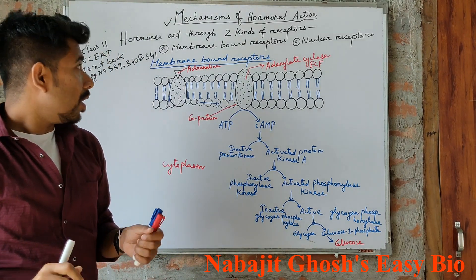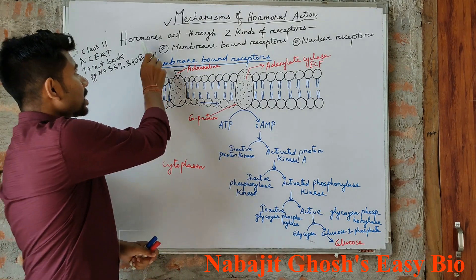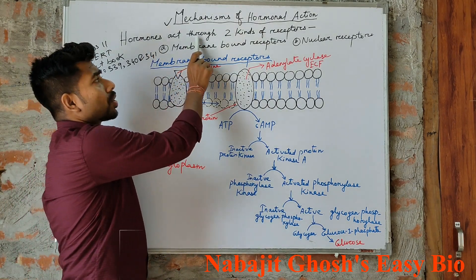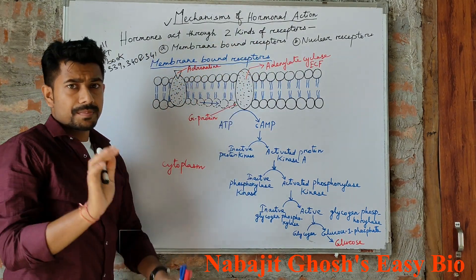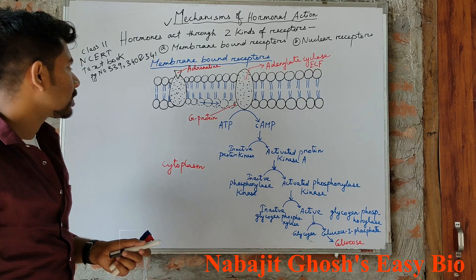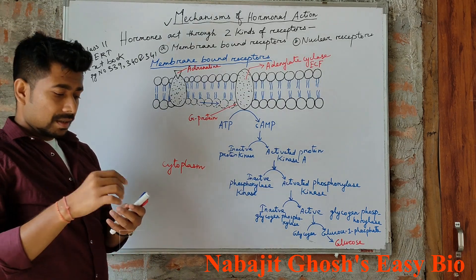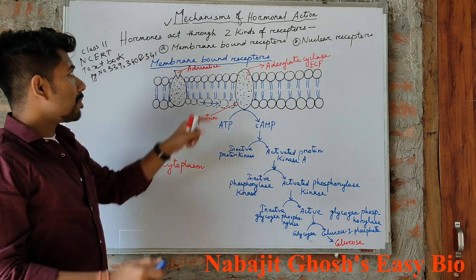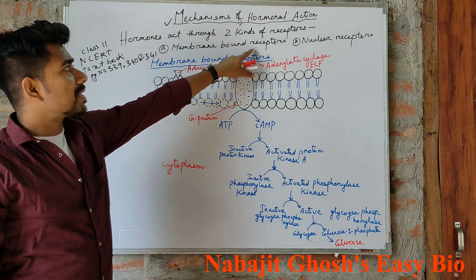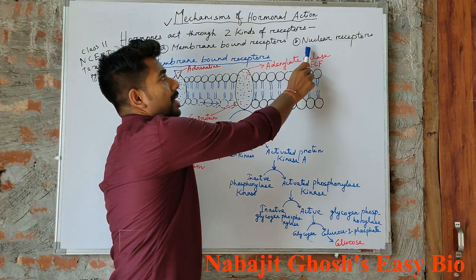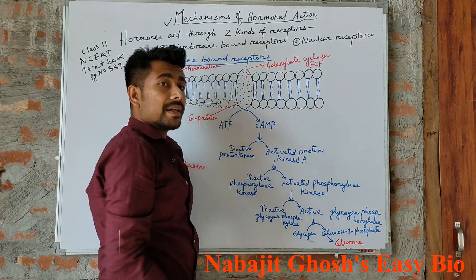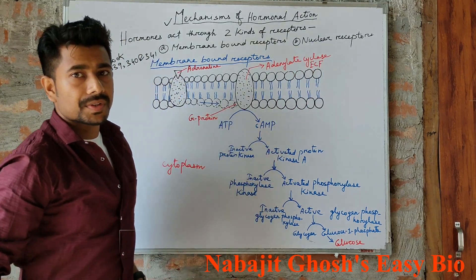Basically, hormones act through two kinds of receptors: number one, membrane bound receptors, and number two, intracellular receptors.